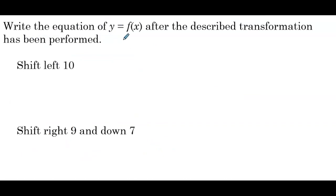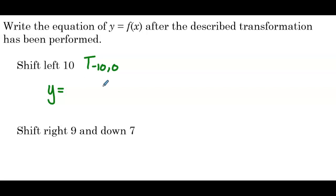Now write the equation of y equals f of x after the described transformation has been performed. We're just given a general function and want to write the equation after a translation. Shifted left 10 means we're subtracting 10 from the x values, so in our equation we do the opposite and add 10 to x, giving us y equals f of x plus 10.